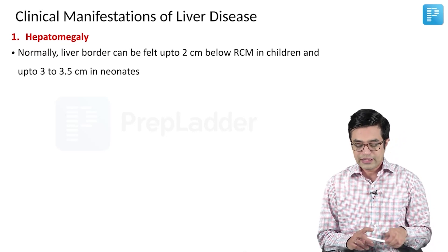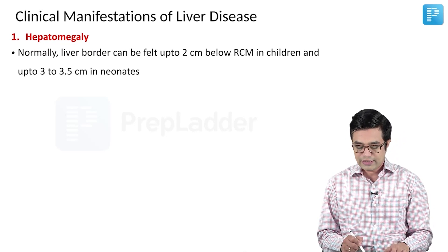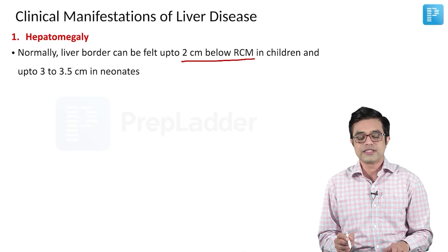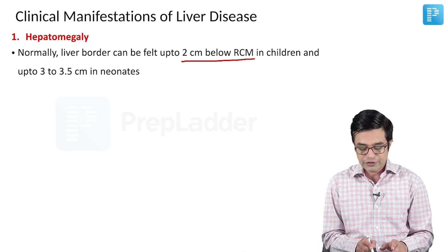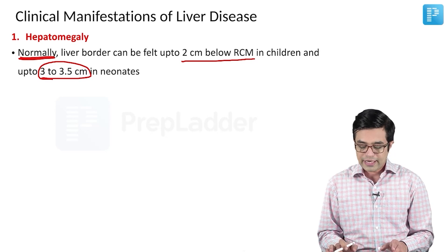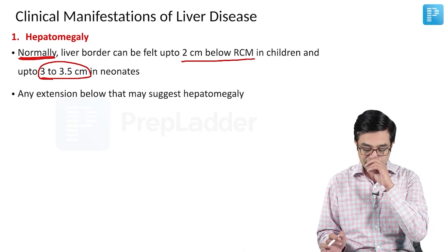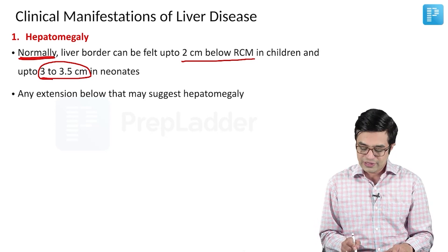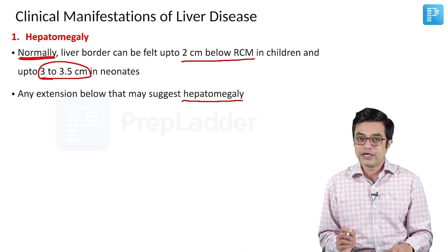In normal children, the liver border is felt about 2 centimeters below the right costal margin in the mid-clavicular line. In case of neonates, up to 3 to 3.5 centimeters is considered to be normal. Any extension below these cutoffs usually suggests hepatomegaly.